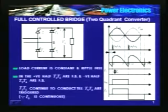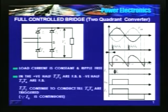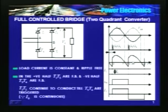Just prior to alpha, output voltage was VBA because T3 and T4 were conducting. Immediately after alpha, the output voltage is VAB — at that instant the input voltage is VAB, so instantaneously this voltage jumps to VAB. Once the devices are turned on, output voltage is same as the input voltage: Vm·sin(ωt) till pi plus alpha. Whatever happened at alpha will happen at pi plus alpha and the process continues. From alpha to pi it is T1 and T2; at pi plus alpha to 2pi plus alpha, it is T3, T4.